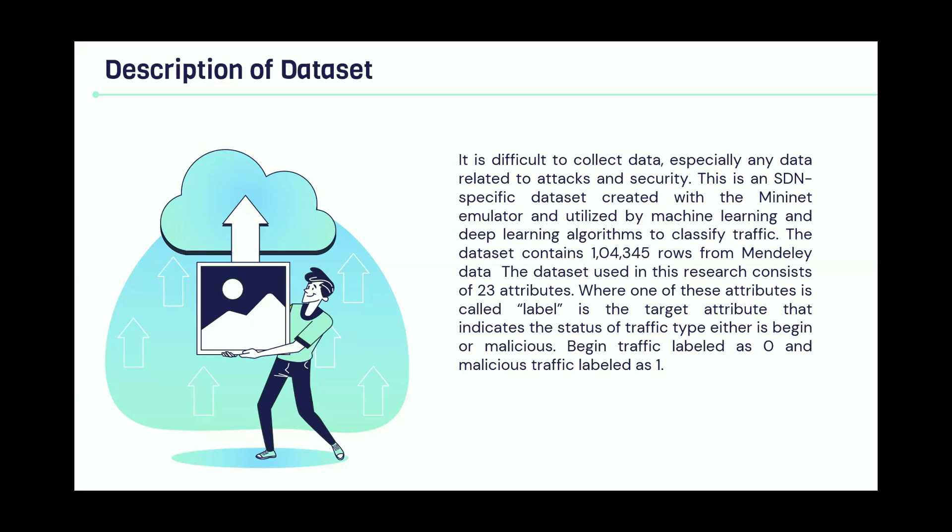The dataset was created within an SDN environment and utilizes machine learning algorithms to classify the traffic. The dataset we found contains more than one million rows from Mendeley data. The dataset used in this research contains 23 attributes, where one of these attributes is called label. The label is our target in this study because we try to differentiate the results for the label attribute. One means malicious traffic and zero means normal traffic.